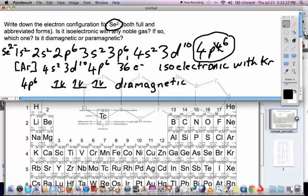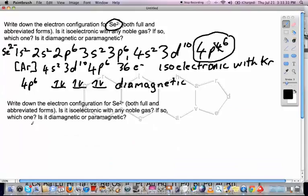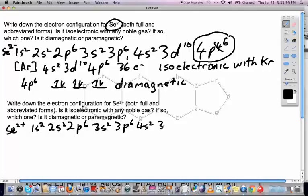Let's take a look at the next example, and we want to figure out what Se2+ looks like. We'll do the same thing again. We've got 1s2, 2s2, 2p6, 3s2, 3p6, 4s2, 3d10.